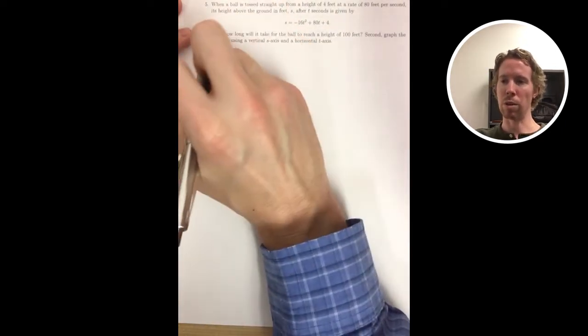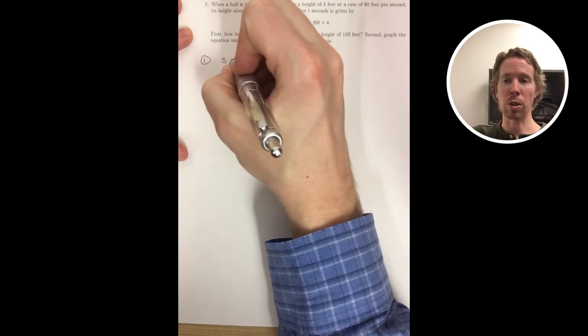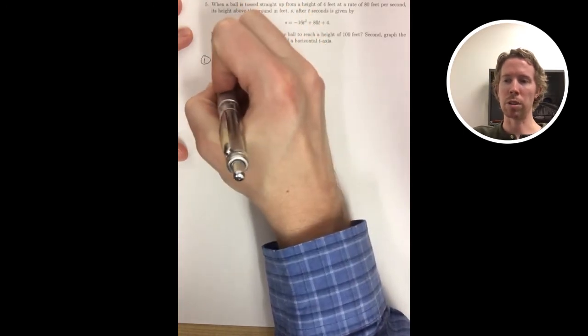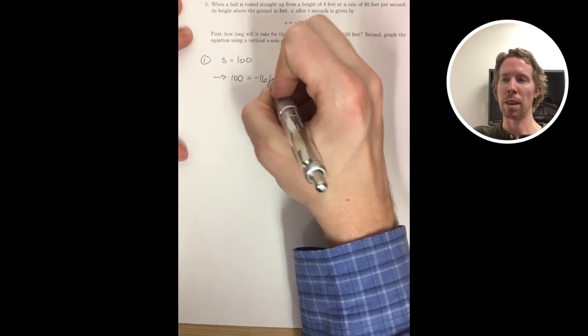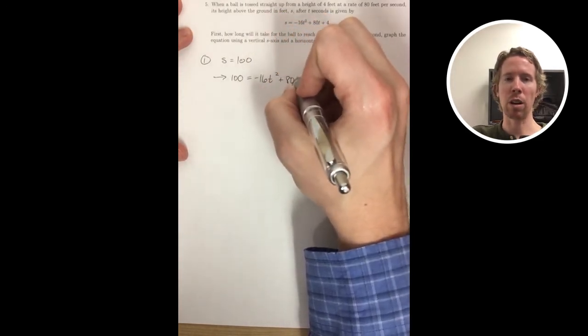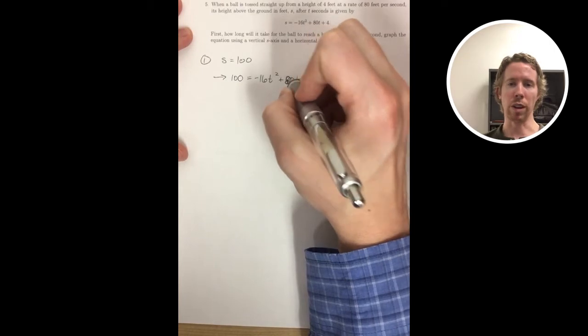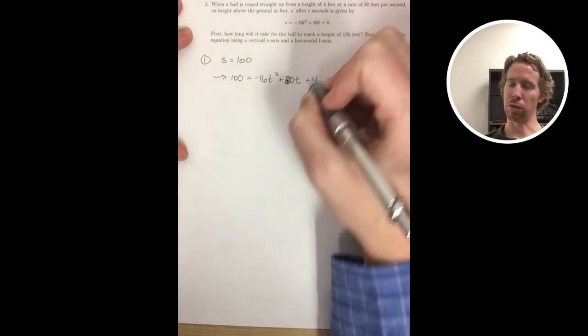Number 5 is a similar setup to number 4. We know it's going to be another quadratic model where the highest power of t is 2. But this time, instead of being launched from ground level, it's launched from a height of 4 feet, so it adds that extra plus 4 at the end.